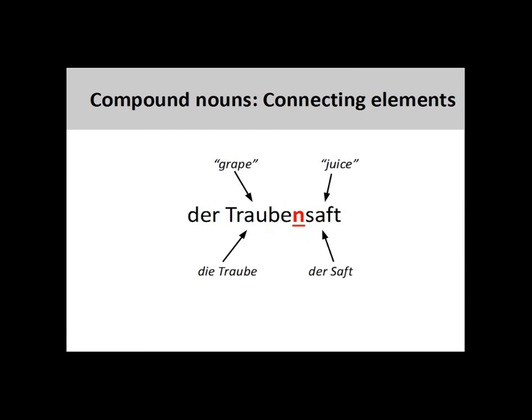Here the noun die Traube, grape, is joined to the noun der Saft, juice, by the plural ending -n, to create the compound noun der Traubensaft, grape juice.